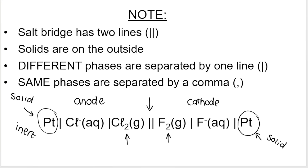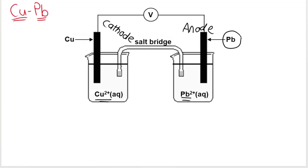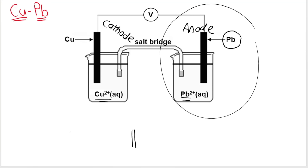Let's do a few more examples. This is a copper-lead galvanic cell from my previous video. Even though this particular diagram shows the anode on the right-hand side, it does not mean that when we do the cell notation the anode must be on the right. The anode is always on the left.